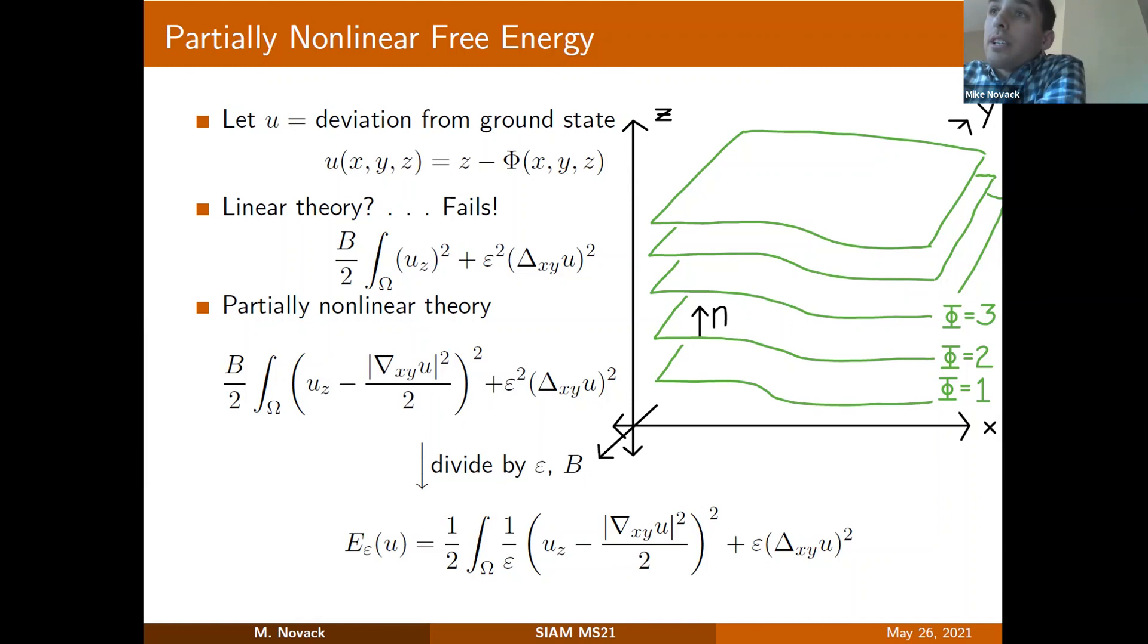It fails for the reason essentially that this first term, the compression energy u_z squared, is only measuring layer distance in the vertical direction. Some of these layers have layer normal that is non-vertical, meaning that the spacing between them is not captured by measuring only in the vertical direction. This linearized theory fails, which has been observed several times at various points in the physics literature. This is the sequence of functionals that we'll be working with for the rest of the talk. For convenience, we will divide by epsilon and B.